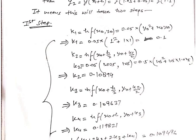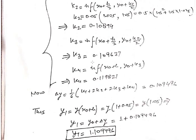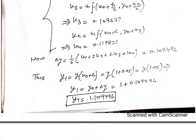After calculating K1, K2, K3, K4, compute Δy = (1/6)(K1 + 2K2 + 2K3 + K4). Then y₁ = y₀ + Δy = 1 + Δy = 1.109496. This is the first approximation, y at x₁ = 1.05.